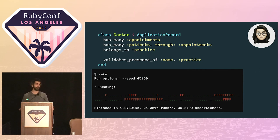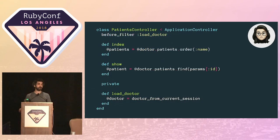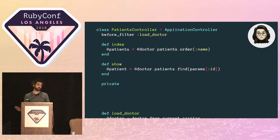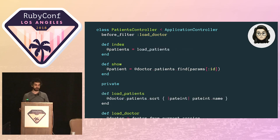So the obvious fix would have been to remove this default ordering. But when Josie tried that, there were a heap of test failures. Quite a lot of the code was relying on the appointments being returned in date order. So, realizing it was going to take a while to unpick all the failures, she decides to put together a quick fix for the bug and come back and remove the default ordering later when she had more time. So she introduces a method to the controller to re-sort the patients after they've been loaded.